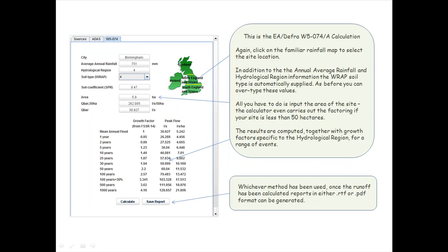This is the EA DEFRA W5074A calculation. Again, click on the familiar rainfall map to select the site location. In addition to the annual average rainfall and hydrological region information, the WRAP soil type is automatically supplied. As before, you can over-type these values.